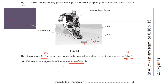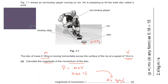To calculate the magnitude of the momentum, we have the formula: momentum P equals M times V, where M is the mass (0.16 kg) and V is the speed or velocity (15 m/s). So 0.16 multiplied by 15 gives us 2.4, and the unit of momentum is kilogram meter per second.